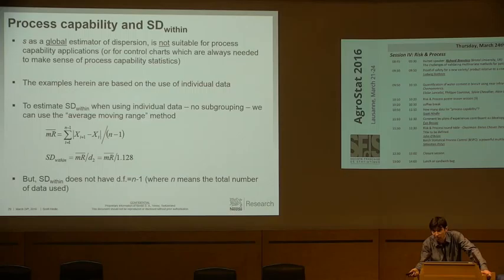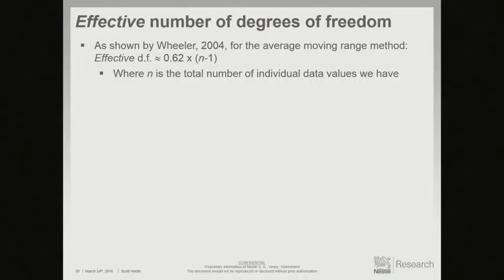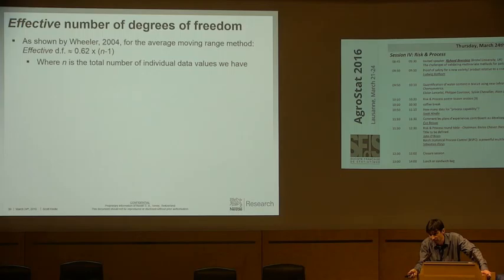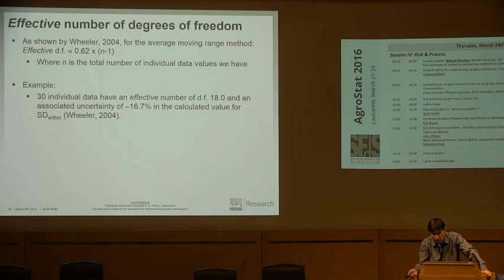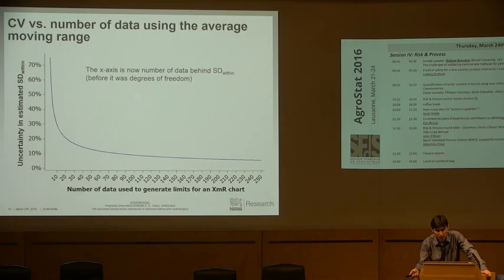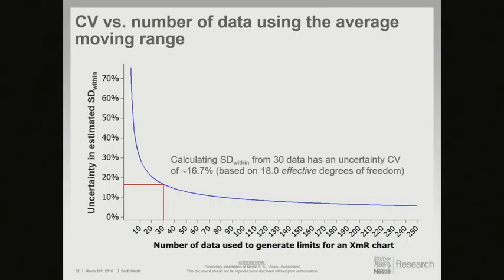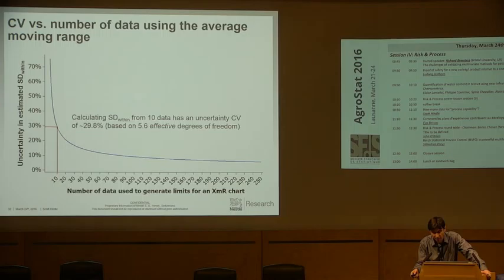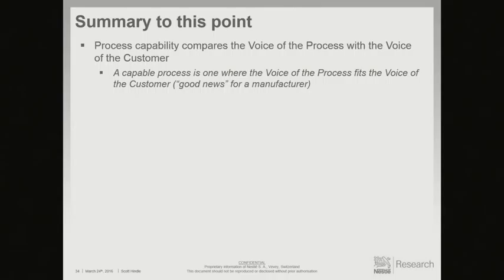As mentioned, the generic standard deviation is not suitable. We focus on capability in the context of individual data, not subgrouping. The formula — also called the method of successive differences — is key. That dispersion statistic does not have the simple n minus 1 degrees of freedom. We can work in the effective number of degrees of freedom, and as shown by Wheeler, it's approximately 60–62% of the total number of data minus 1. For example, with 30 data, we have approximately 18 degrees of freedom, not 29, which is around 16–17% uncertainty. If that's not good enough, you need a lot more data to have an impact.